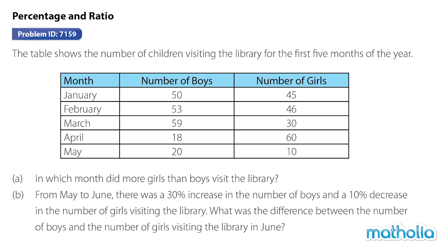The table shows the number of children visiting the library for the first five months of the year. Question A: In which month did more girls than boys visit the library? Question B: From May to June, there was a 30% increase in the number of boys and a 10% decrease in the number of girls visiting the library. What was the difference between the number of boys and the number of girls visiting the library in June?